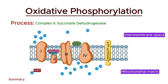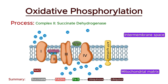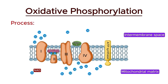To summarize the second stage: electrons transfer from succinate, through FADH2 and iron-sulfur clusters, to ubiquinone, reducing it to ubiquinol. Although complex 2 does not pump protons, it plays a crucial role in maintaining the flow of electrons through the electron transport chain.